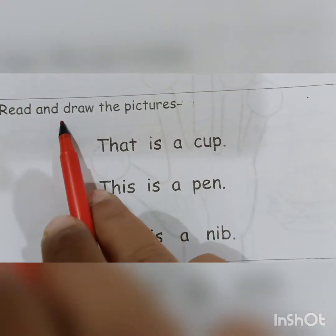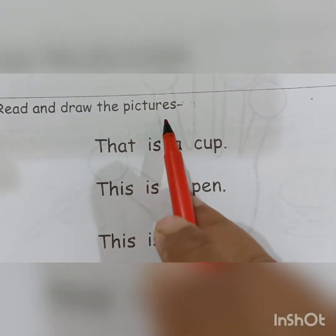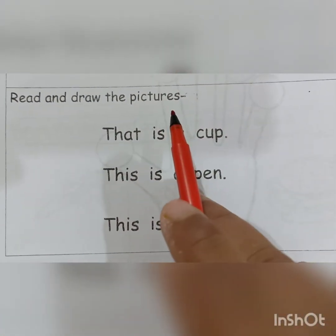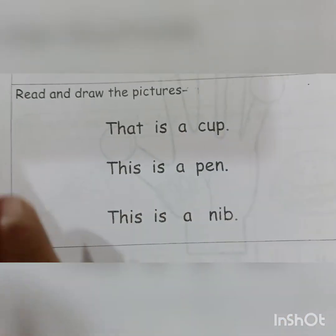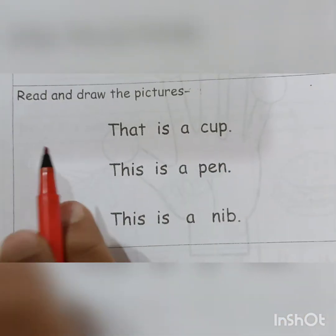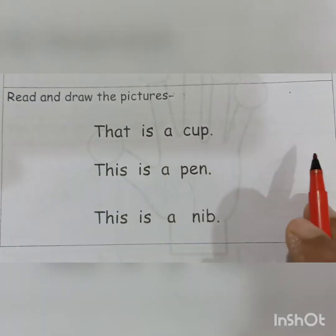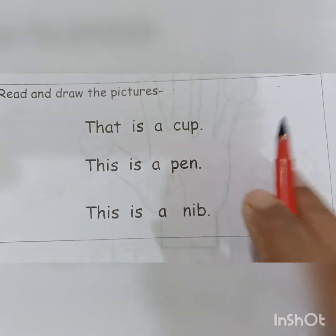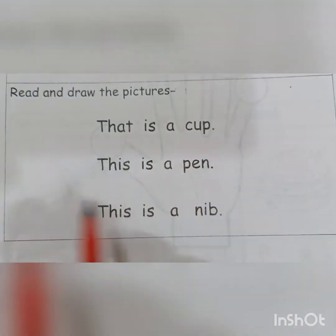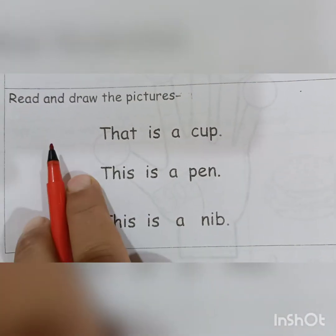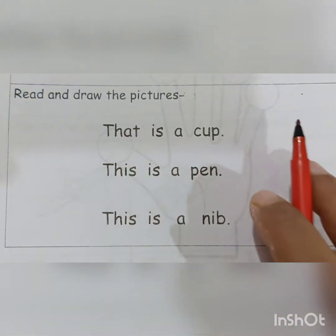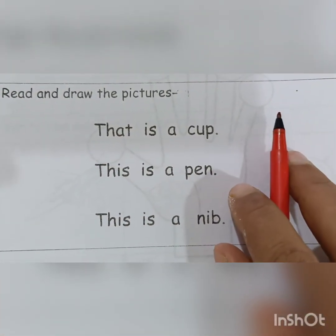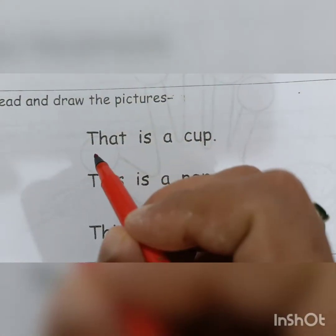Now the next activity: read and draw the pictures. We have to draw the pictures — here we draw for near objects, and here we draw for far objects. If it uses 'this', we will draw on the left side. If it uses 'that', we will draw on the right side.